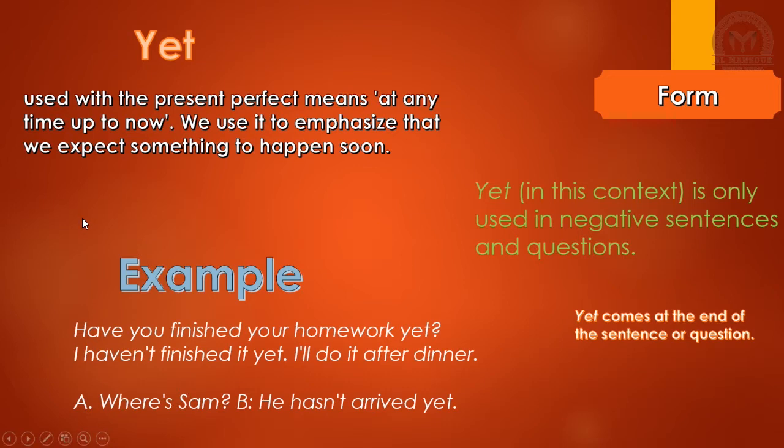Now we're going to talk about yet. We use it to talk about actions that aren't finished. For example: Have you finished your homework yet? I haven't finished it yet. I'll do it after dinner. Yet comes either with a question or a negative sentence, it doesn't come with affirmative one. Yet comes at the end of the question or sentence.